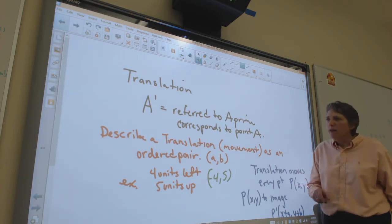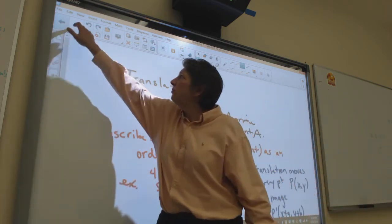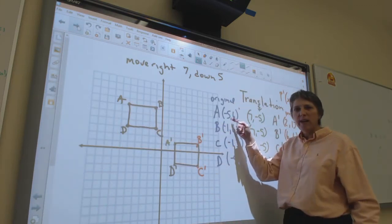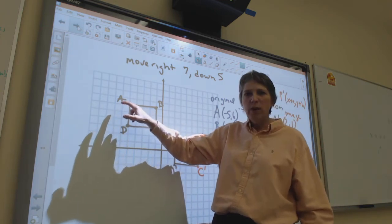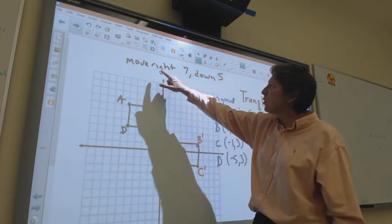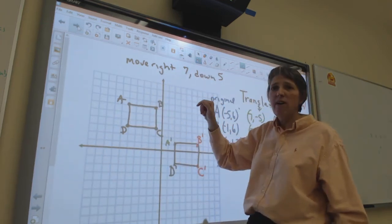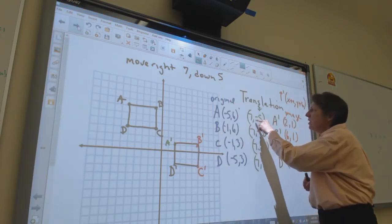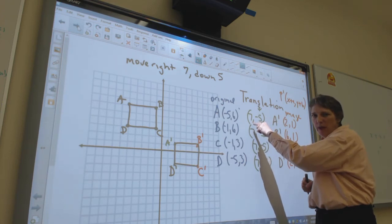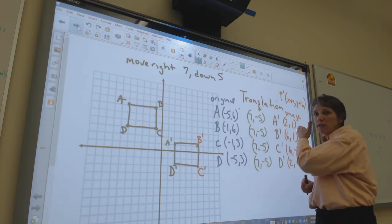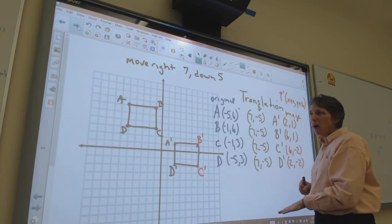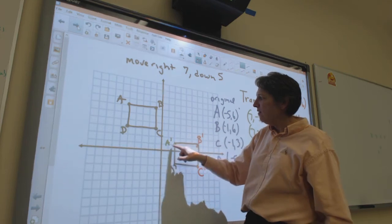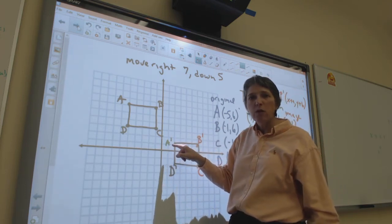For every point on the figure: say point A is at (-5, 6). The translation tells us to move right 7 and down 5, so the movement ordered pair is (7, -5). I move over 7 and down 5 — that gives me A prime, the new location of point A.